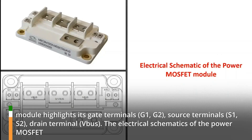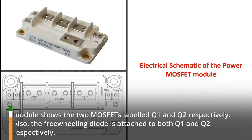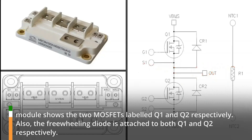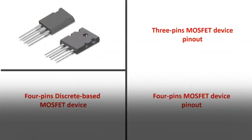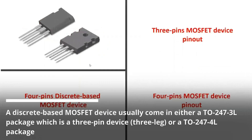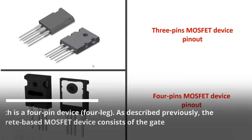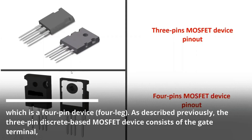The electrical schematics of the power MOSFET module shows the two MOSFETs labeled Q1 and Q2 respectively. Also, the freewheeling diode is attached to both Q1 and Q2 respectively. A discrete-based MOSFET device usually comes in either a TO-247-3L package, which is a three-pin device, or a TO-247-4L package, which is a four-pin device.